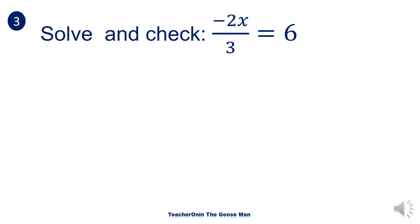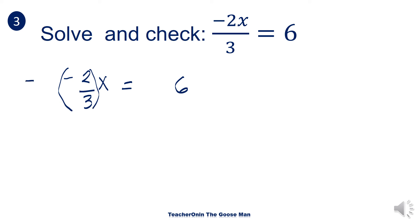Let's have this next example: negative 2x over 3 is equal to positive 6. Let's rewrite this as negative 2 thirds times x is equal to 6. Again, I'll get the reciprocal of negative 2 thirds, which is negative 3 over 2. Since I multiply negative 3 over 2 on the left side of the equation, I multiply this value to the right side as well.